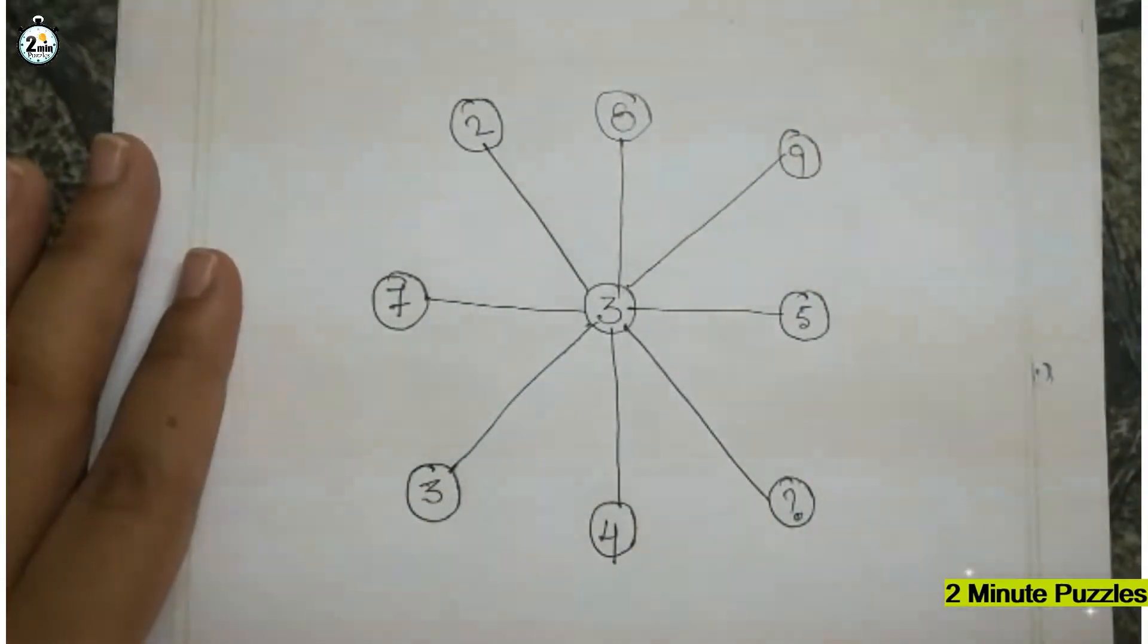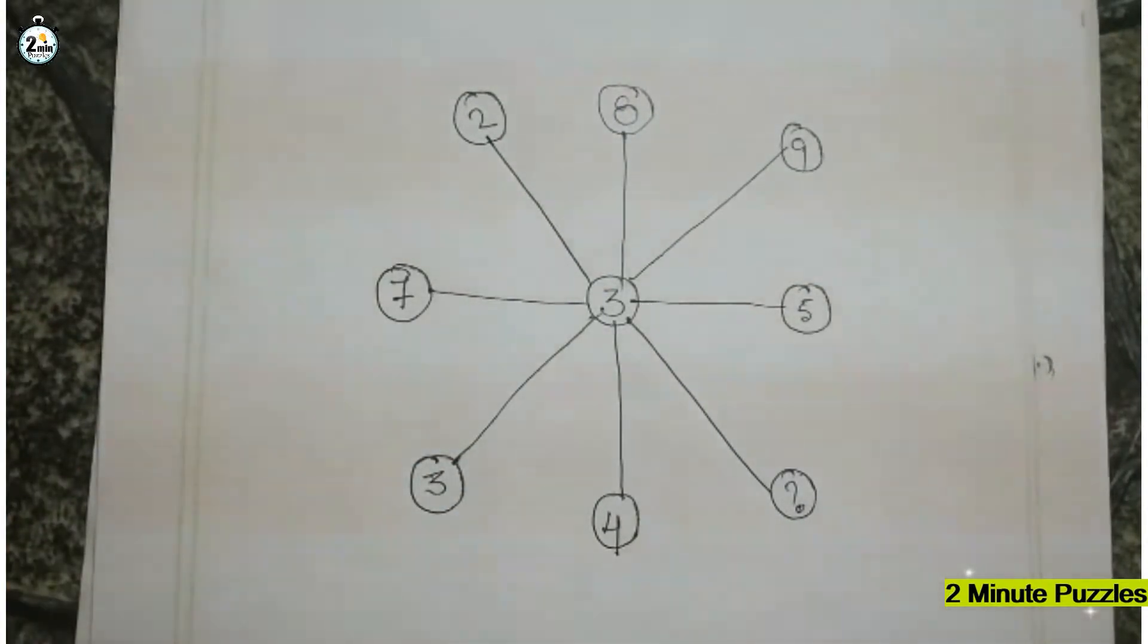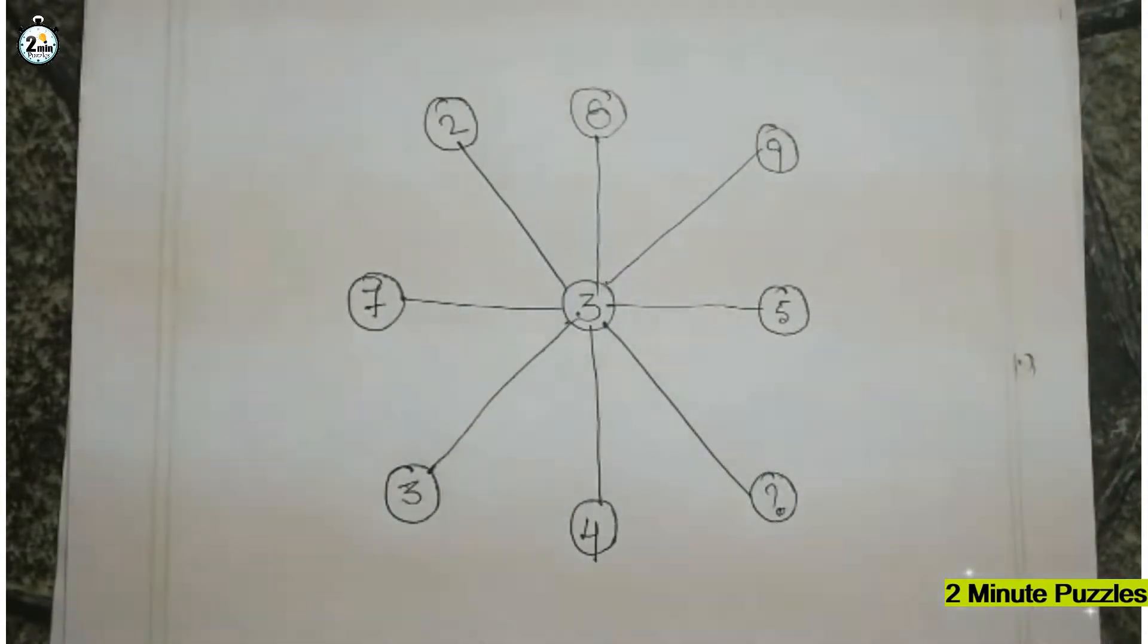So there must be some connection between the opposite circles and also the middle circle. So let's check if they are doing anything good if we add up. So 8 plus 3 plus 4 is 15, and 9 plus...